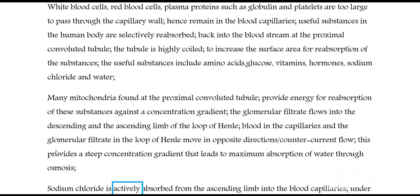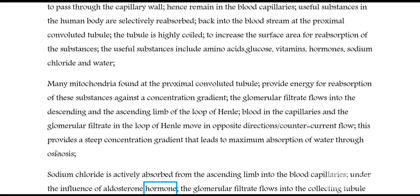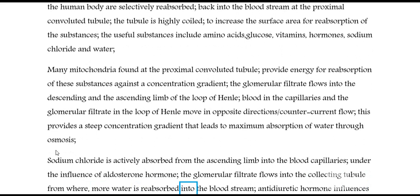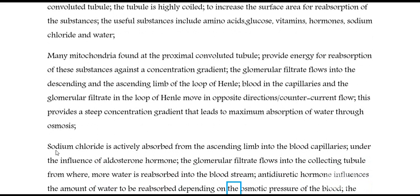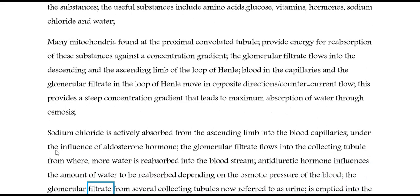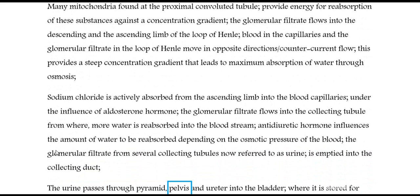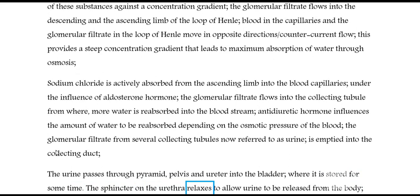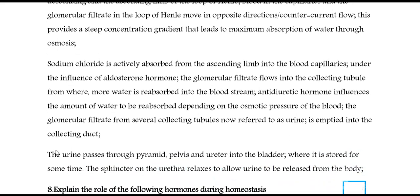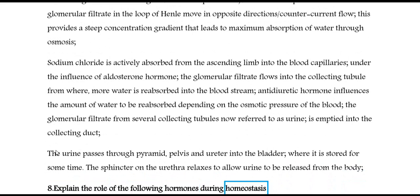Sodium chloride is actively absorbed from the ascending limb into the blood capillaries under the influence of aldosterone hormone. The glomerular filtrate flows into the collecting tubule, from where more water is reabsorbed into the bloodstream. Antidiuretic hormone influences the amount of water to be reabsorbed depending on the osmotic pressure of the blood. The glomerular filtrate from several collecting tubules, now referred to as urine, is emptied into the collecting duct. The urine passes through the pyramid, pelvis, and ureter into the bladder, where it is stored. The sphincter on the urethra relaxes to allow urine to be released from the body. Question 8: Explain the role of the following hormones during homeostasis.